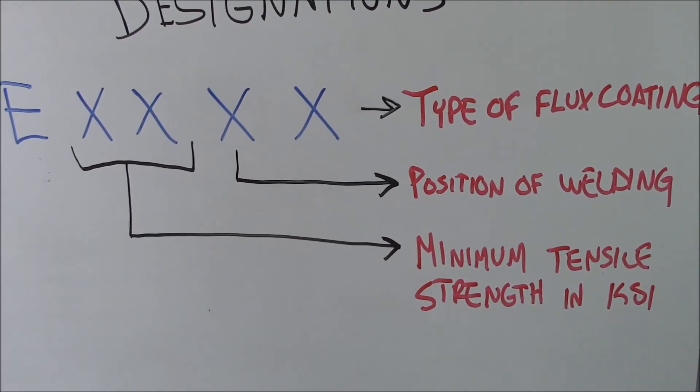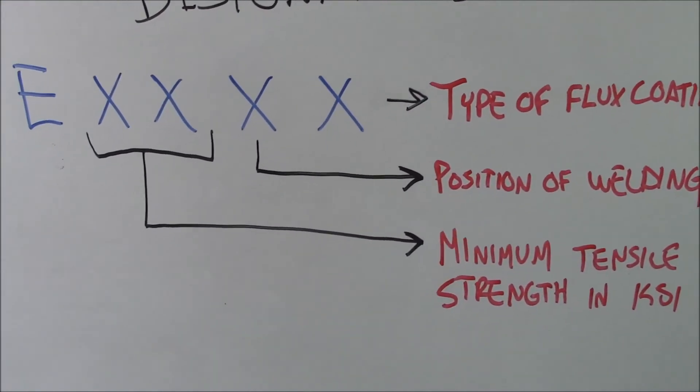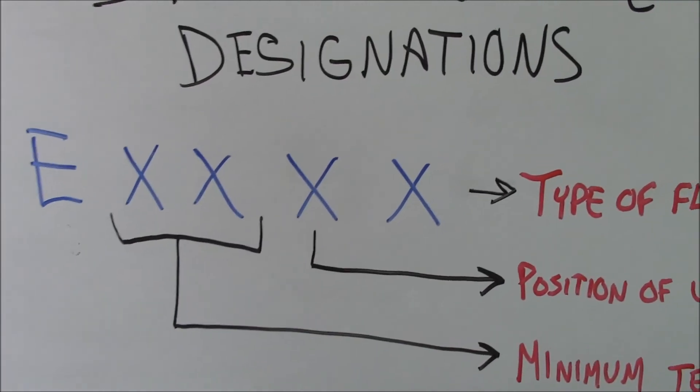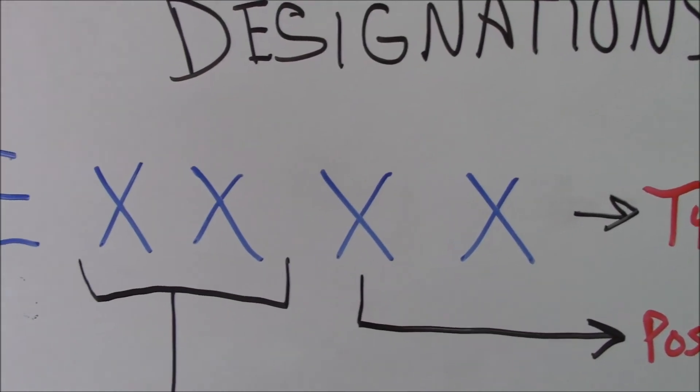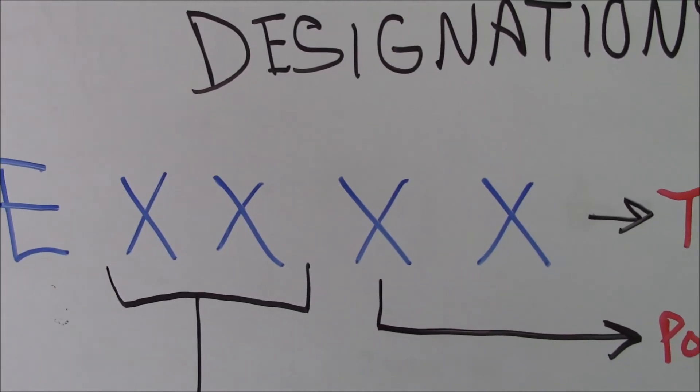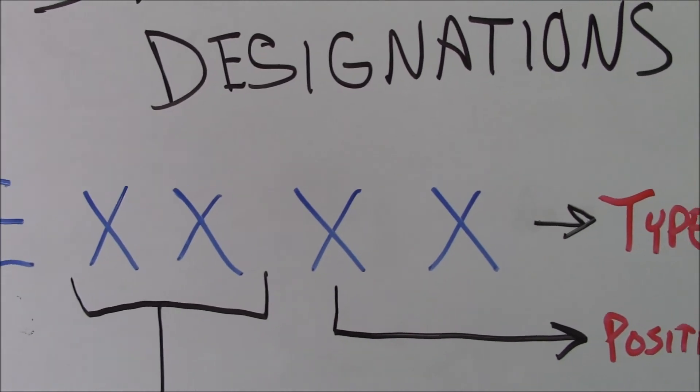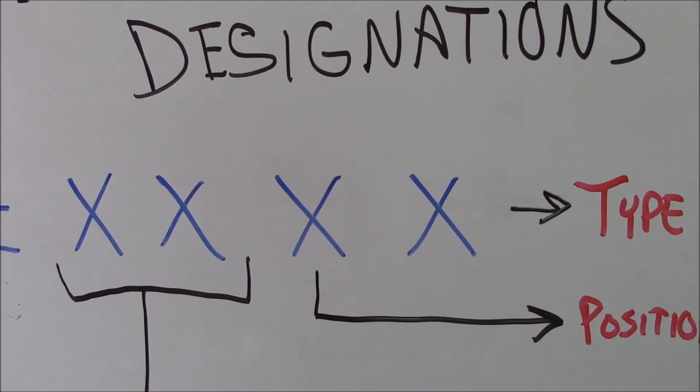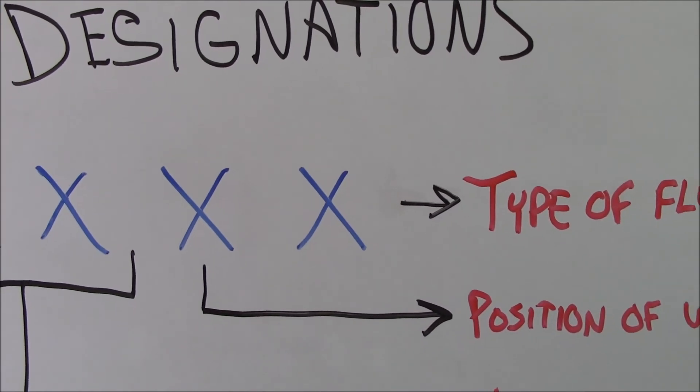If you get into some low alloys, you'll end up with a third X over there. So what that basically means is, let's just say for instance we have a 7018 welding electrode here. That is 70,000 PSI is your minimum tensile strength, the one being that it's all positions, and the eight meaning that it is a low hydrogen welding electrode.